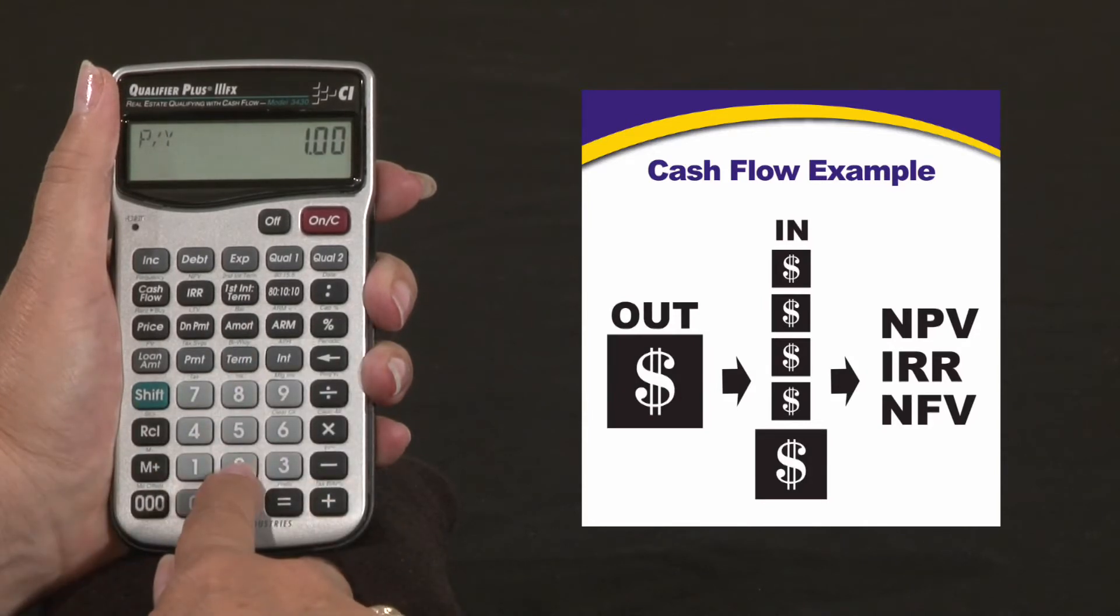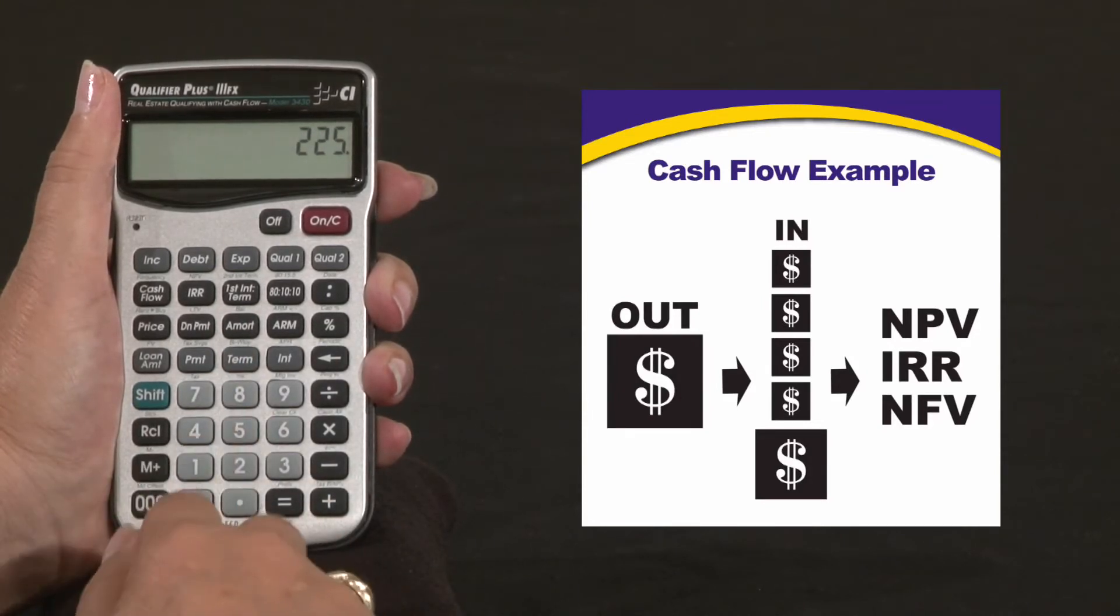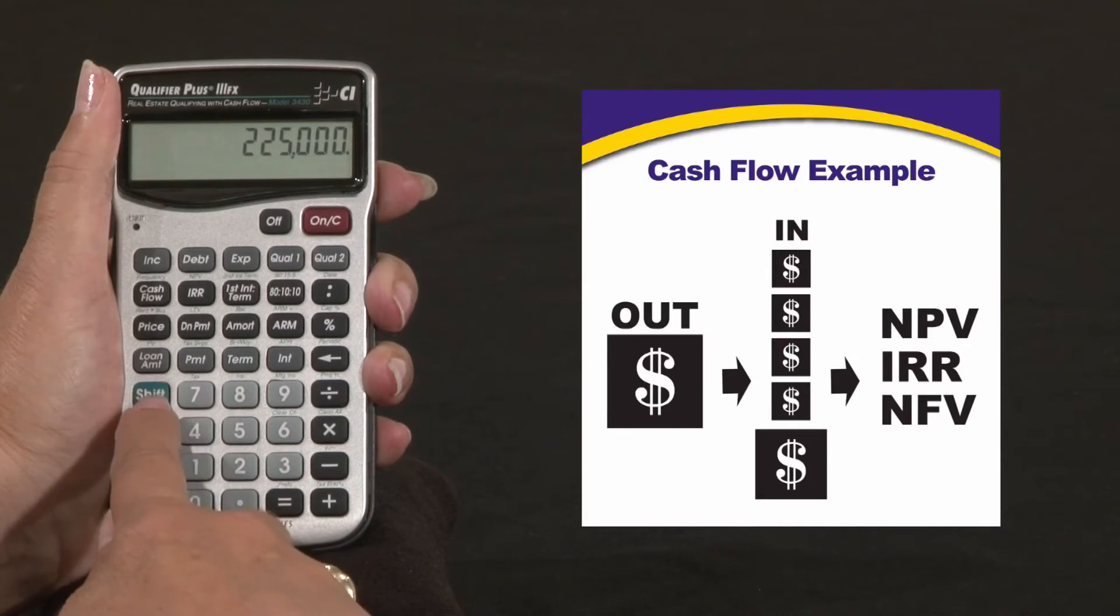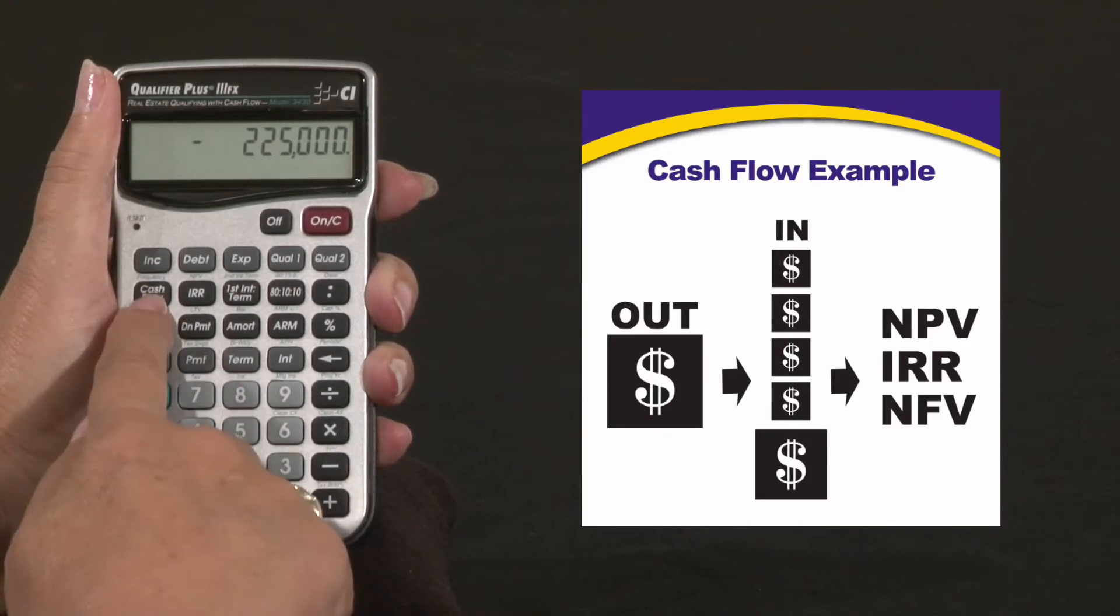Now we're going to enter his initial outlay as a negative because this is cash going out. So Shift, Minus, Cash Flow.